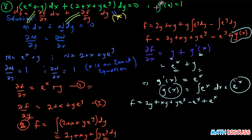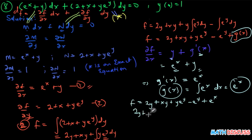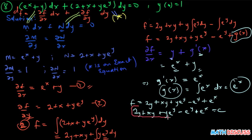Now we have the complete f. The general solution is f(x, y) equals c, that is: 2y plus xy plus y·e^y minus e^y plus e^x equals c. This is the general solution of the differential equation.